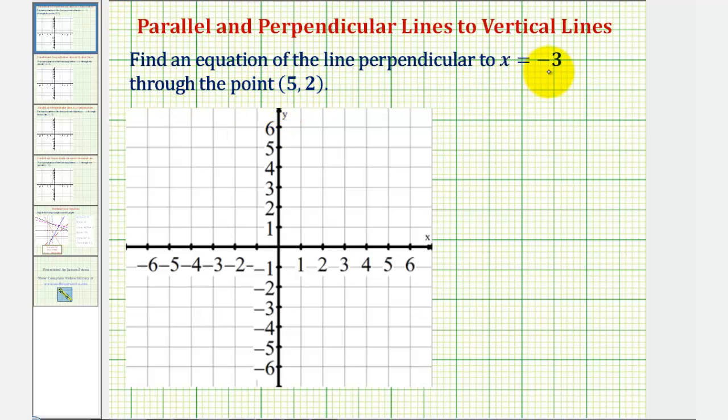We should recognize x equals negative three will be a vertical line, but just in case we don't, let's go ahead and graph it using a table of values. Because the equation is x equals negative three, all the x coordinates must be negative three.